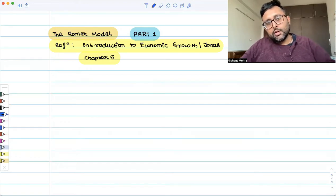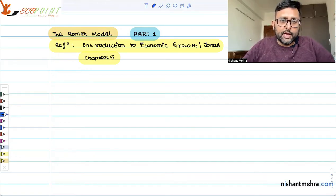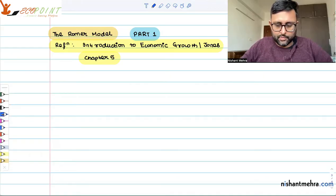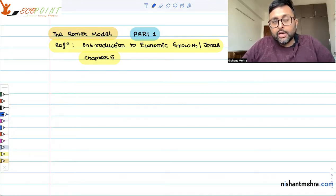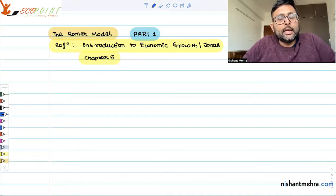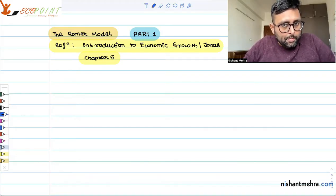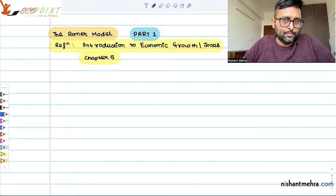The Romer model. We are going to distinguish the Romer model with the Solow model. The main thing about the Romer model is that it has endogenized the technology, the technological progress. While in the Solow model, technological progress was exogenously given. So this is the basic difference between the two.